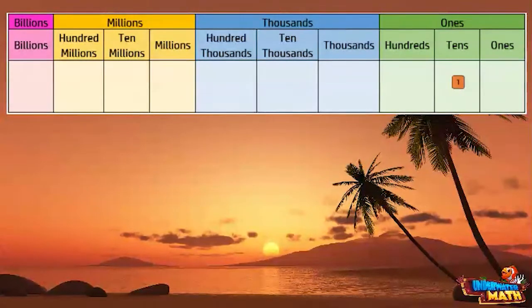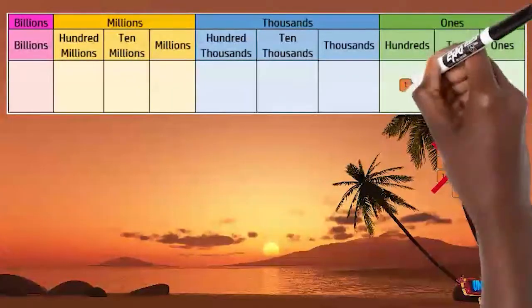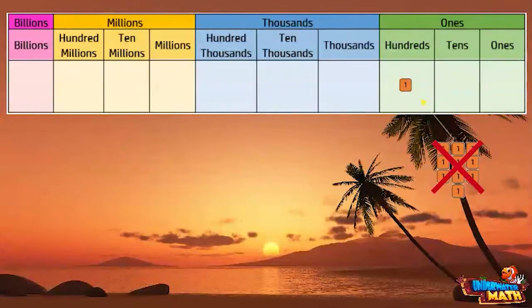Now if we try to put 10 tens into the box, we need to convert it to 100. That one in the hundreds place is 10 times greater than a one in the tens place because it took 10 tens to make that 100.